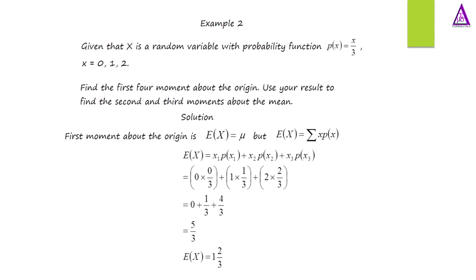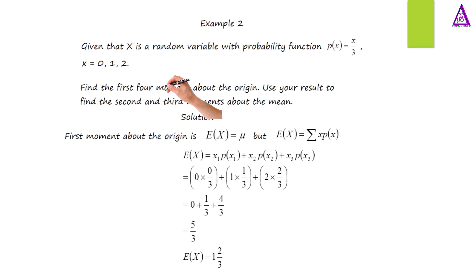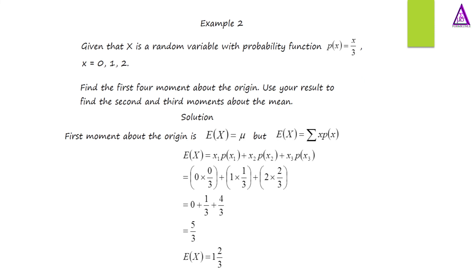Example two: Given that s is a random variable with probability function p(s) equal to s divided by 3, for s equal to 0, 1, 2. Find the first four moments about the origin and use your results to find the second and third moments about the mean.